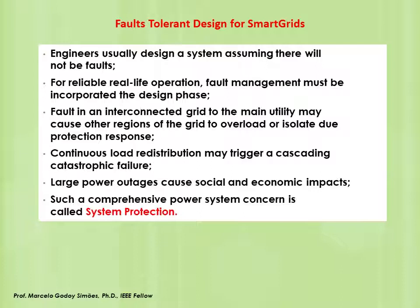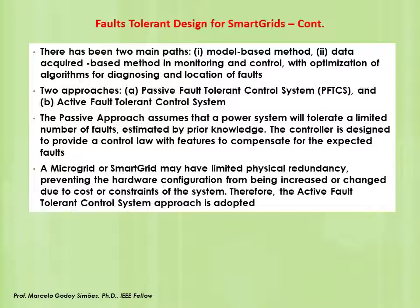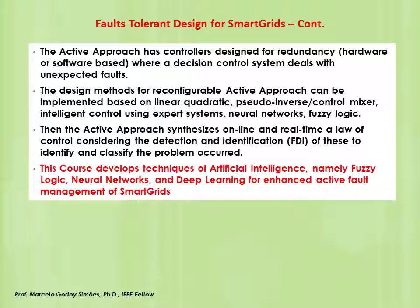Faults are related to how the electric power system protection responds. Interconnected grids may cause other regions to overload with a possible cascading failure; power outages cause social and economic impacts. Fault-tolerant based design should support electric power system protection. There are two possible approaches in fault-tolerant control design: a passive one assuming prior knowledge — the system tolerates some faults and a controller already has compensation for those expected faults — and an active fault-tolerant control where the system has adaptive learning based on forecasting, linear quadratic methods, pseudo-inverse linear algebra, intelligent control with expert systems, or neural networks plus fuzzy logic.